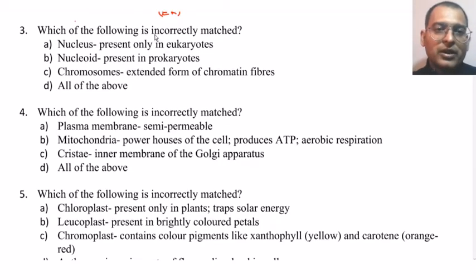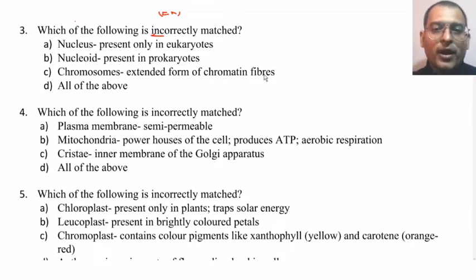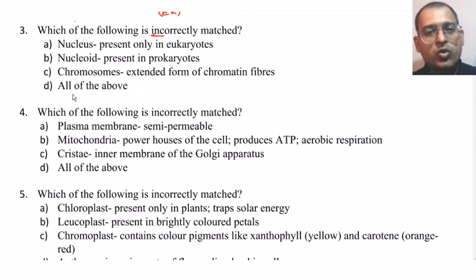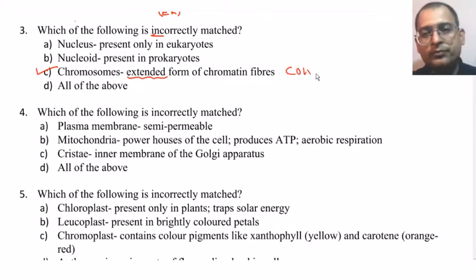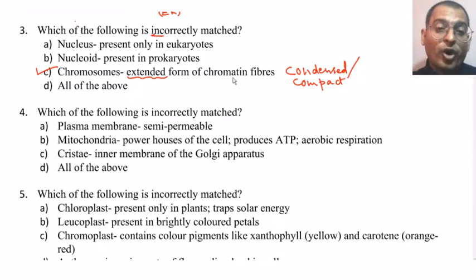Next question: which of the following is incorrectly matched? Nucleus — present only in eukaryotes; nucleoid — present in prokaryotes; chromosomes — extended form of chromatin fibres; all of the above. The answer is chromosomes, because chromosomes are not the extended form — they are the condensed or compact form of chromatin fibres.